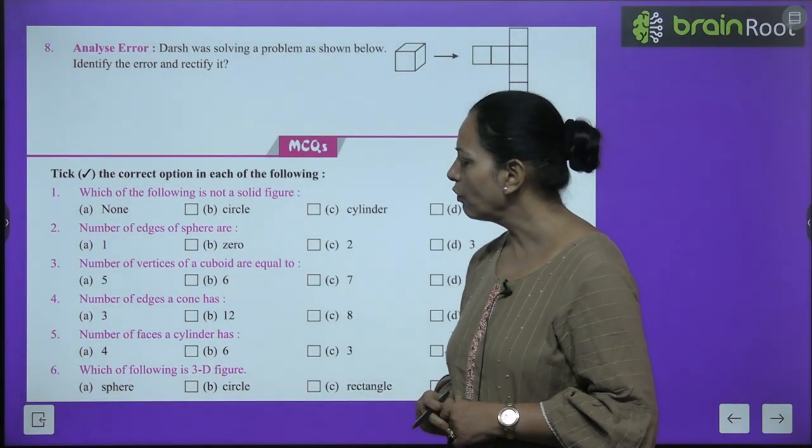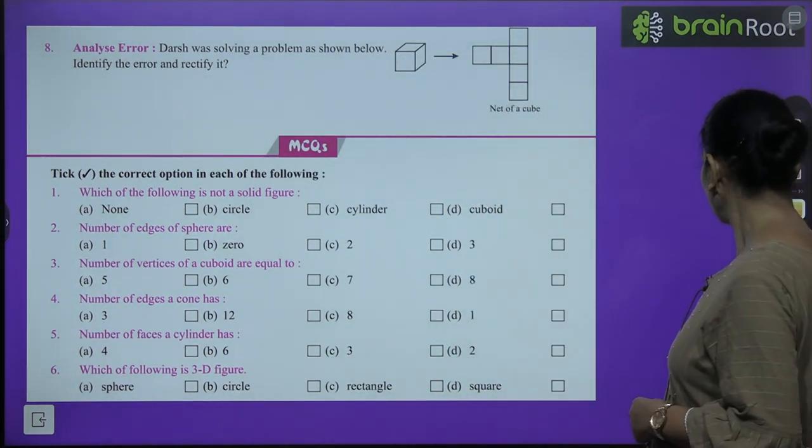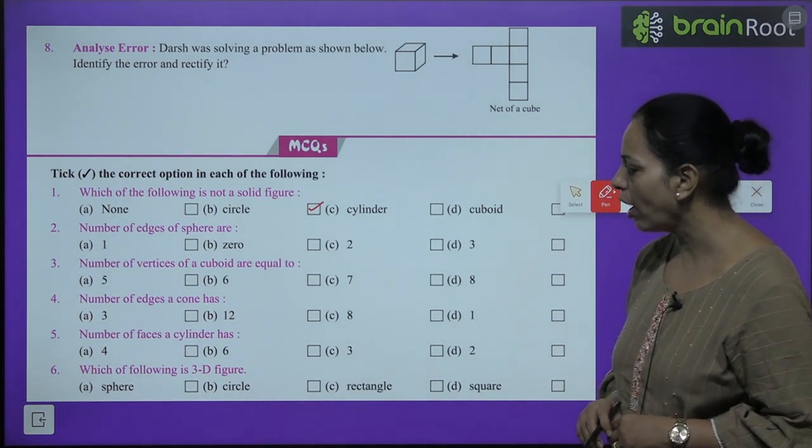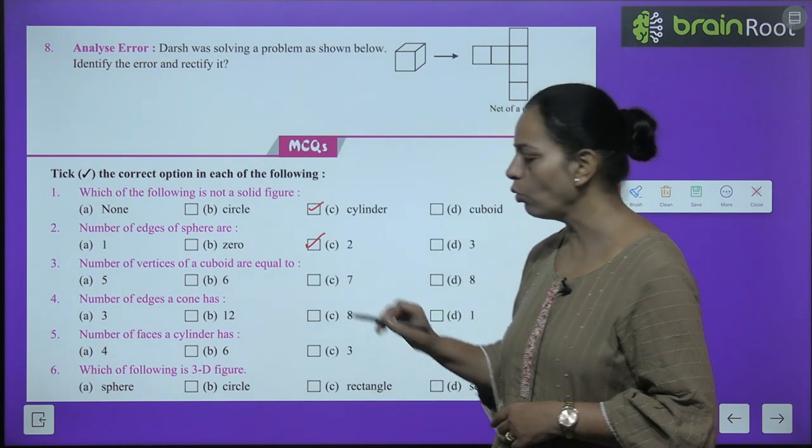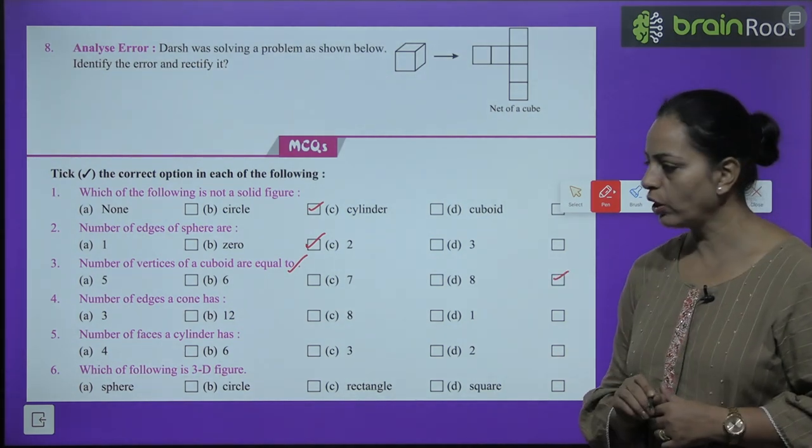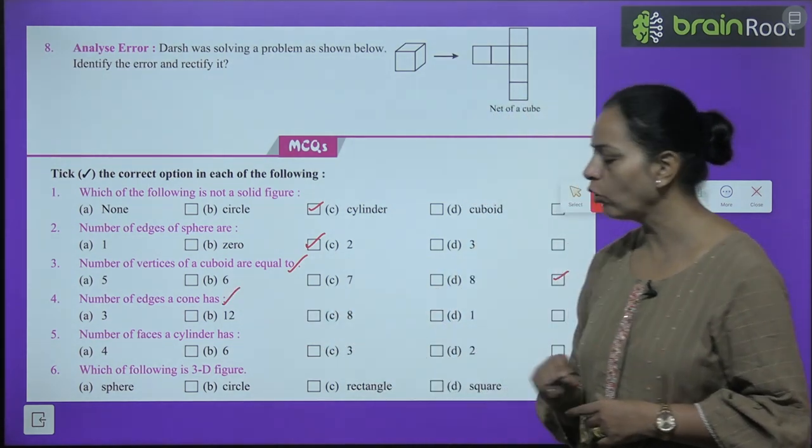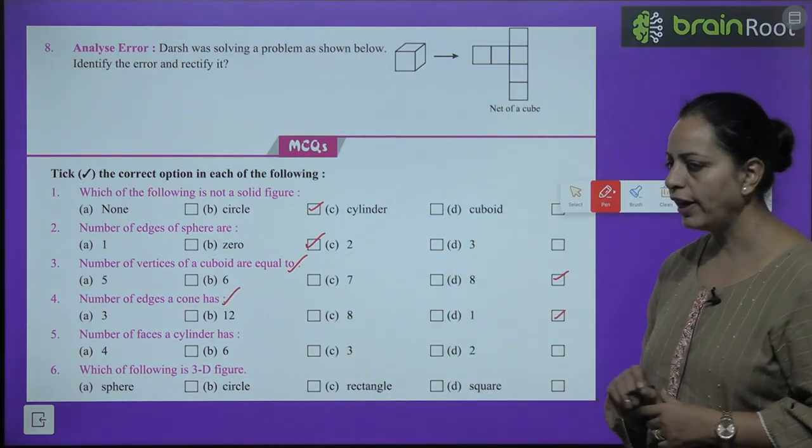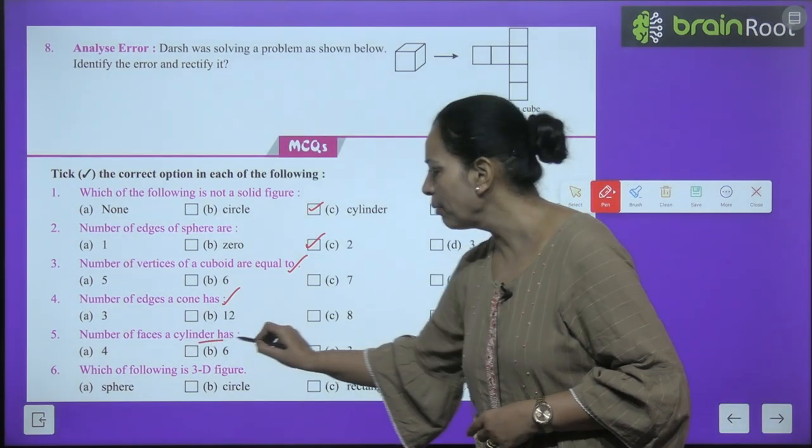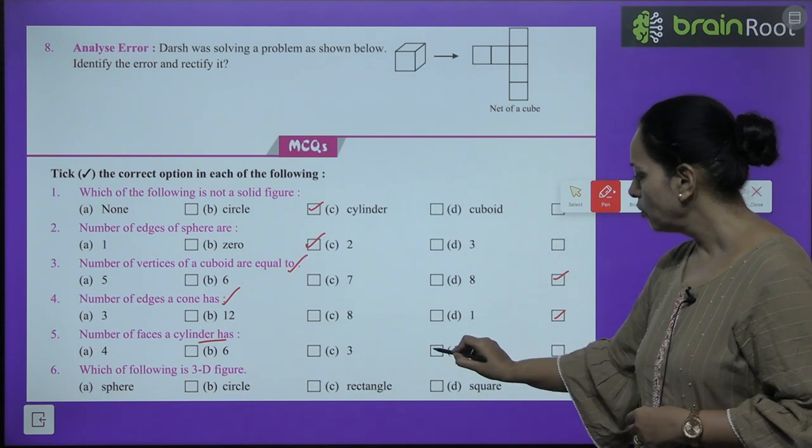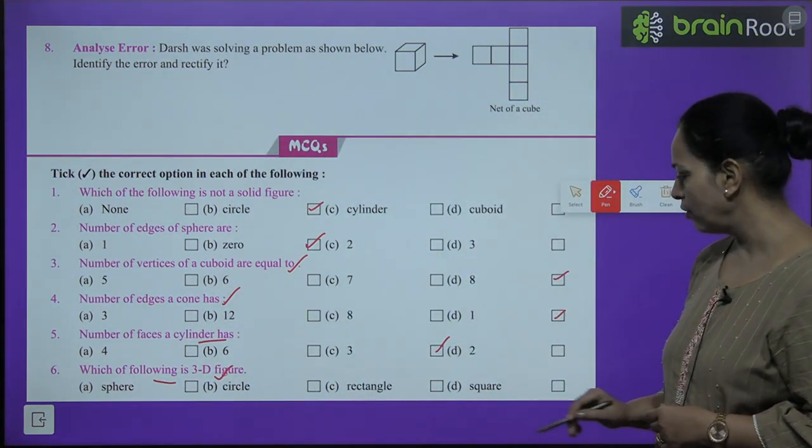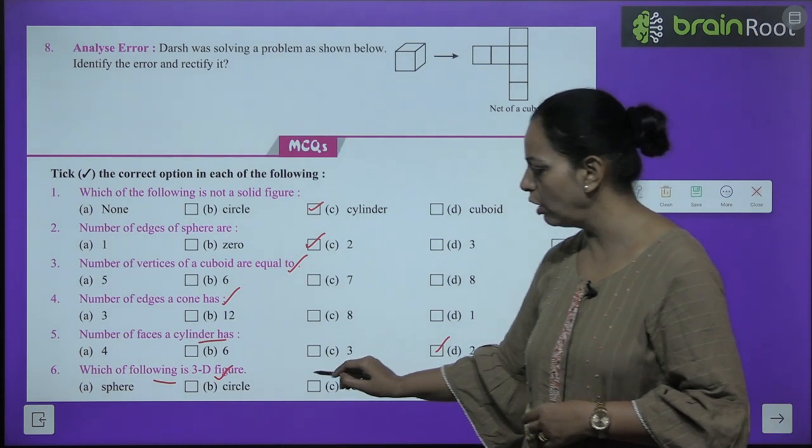Now we are coming to MCQs. First one: Which of the following is not a solid figure? Solid means 3D. Which is not 3D? That is the circle. Second one: Number of edges of a sphere are? How many edges in a sphere? Zero. Third one: Number of vertices of a cuboid? Eight. Fourth one: Number of edges of a cone? It has 1 edge. Fifth one: Number of faces a cylinder has? In a cylinder, how many faces? You can see there are 3 - because 2 circles and 1 curved. Sixth one: Which of the following is a 3D figure? Which is 3D? Square no, rectangle no, circle no, cube yes.